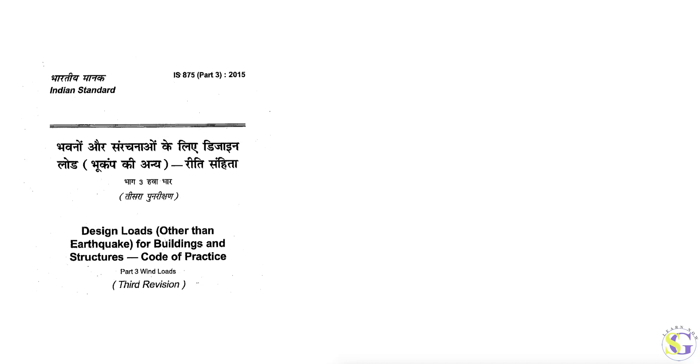Hello everyone. In the last class we discussed about the transmission tower and how to make a model. In continuation with that, today I will be discussing how to make a wind load analysis and how to calculate the wind load for transmission towers. IS 875 Part 3 2015 codebook is used for wind load analysis, and we want to know how to calculate the wind load according to the formulas.